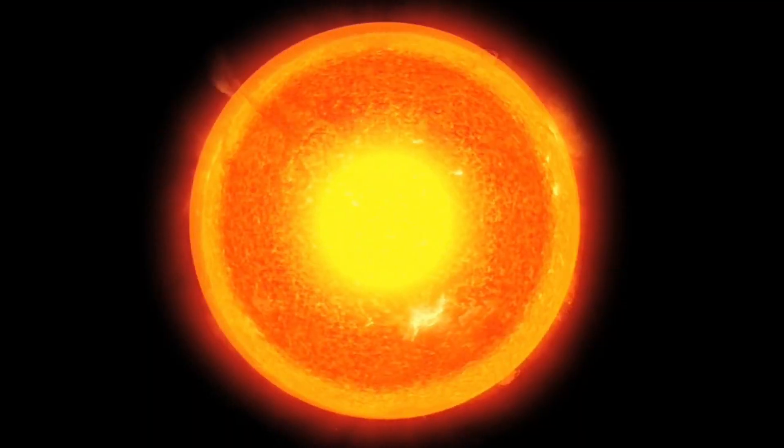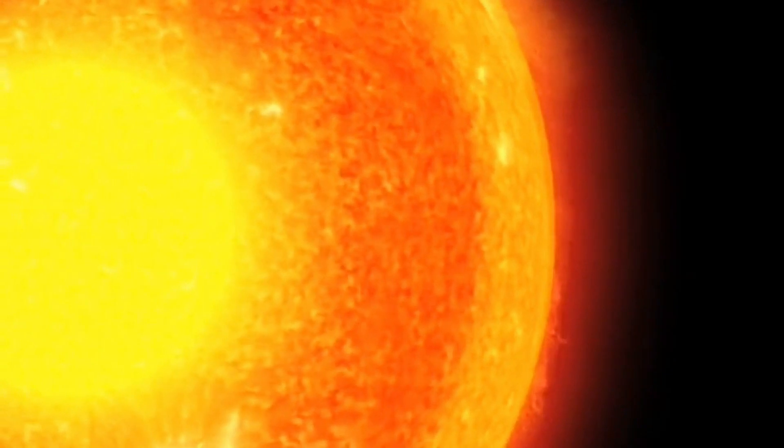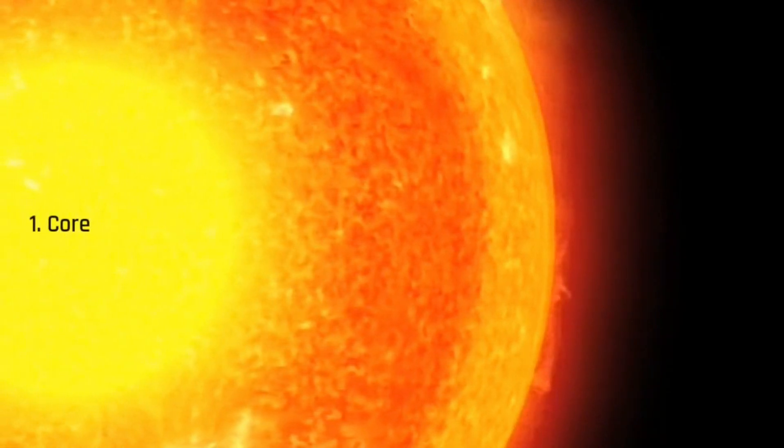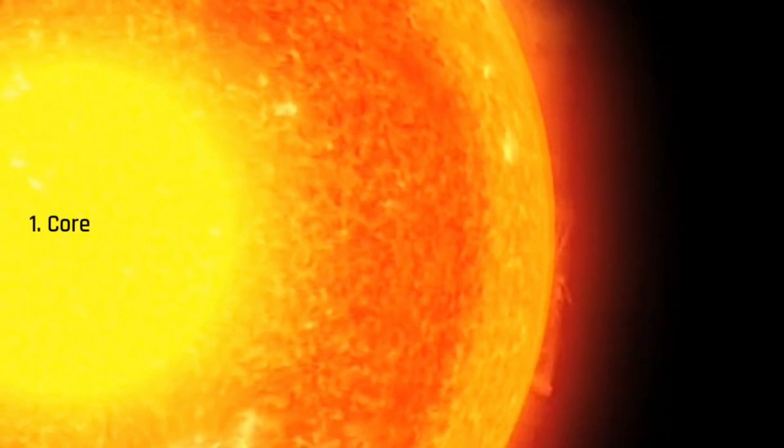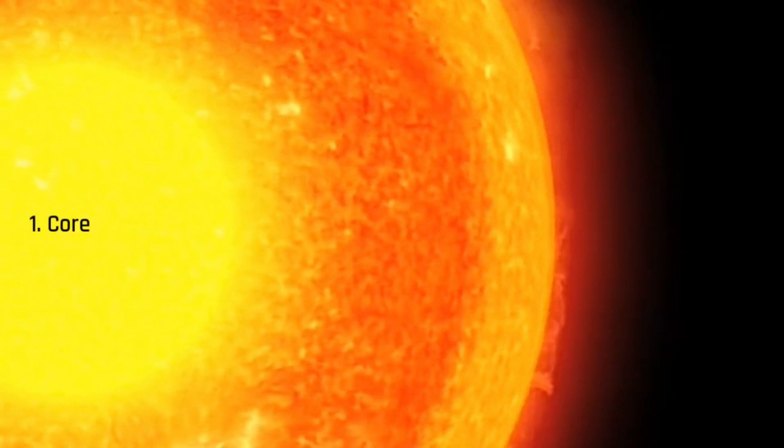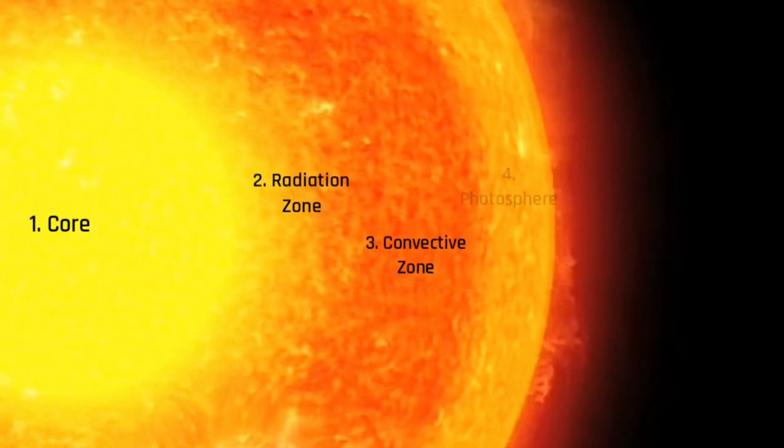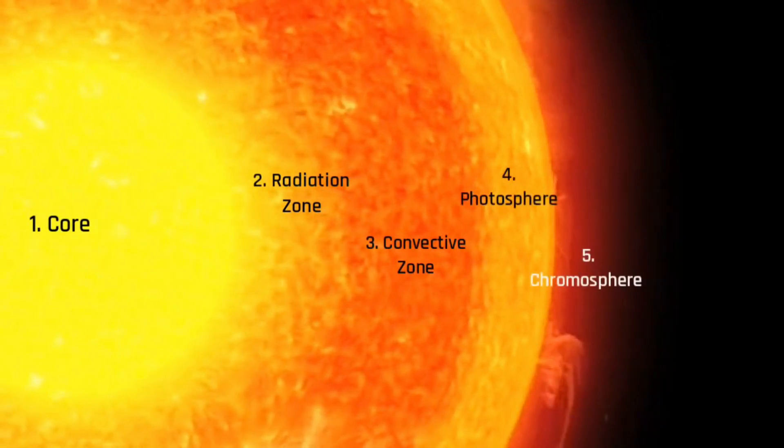When we examine the interior structure of the Sun, we discover distinct layers. At its core, the Sun harbors a region with a staggering temperature of approximately 15 million Kelvin. Moving outward, there exists a sequence of layers, including radiative zone, convection zone, photosphere, and chromosphere.